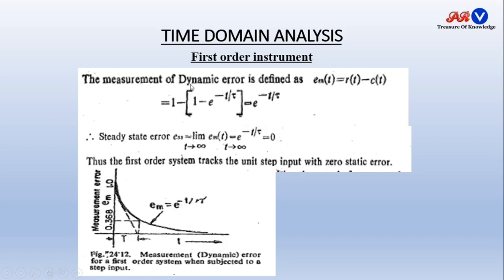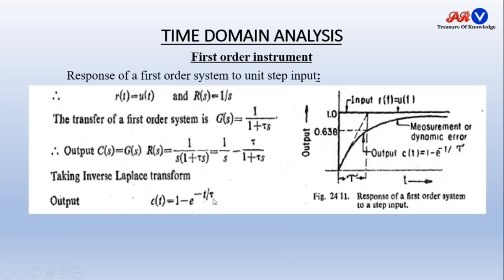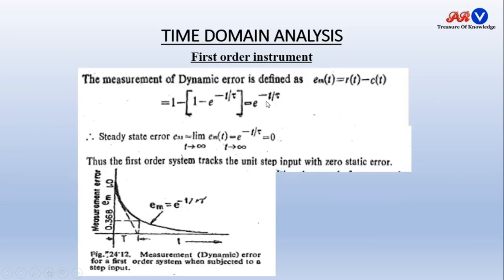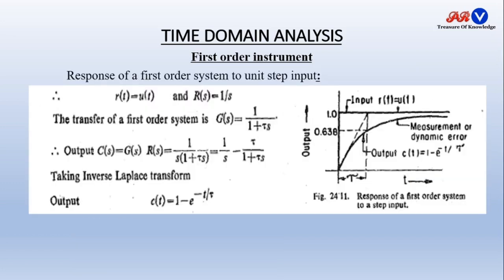Now we can calculate the dynamic error. Dynamic error = input − output. Input for unit step is always 1, and output C(t) = 1 − e^(−t/τ). So error = e^(−t/τ). Under steady state condition, when t becomes infinite, this error becomes 0. Therefore, a first order system tracks the unit step input with zero static error under steady state condition when time is infinite.